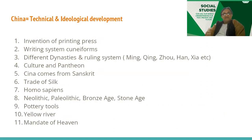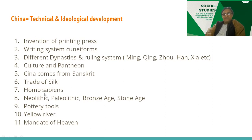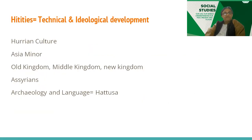For China on technical development — China and Egypt are the two you have to focus on more. Key topics: invention of the printing press, the cuneiform writing system, different dynasties and their rulers — Ming, Qin, Zhu, Han, Xia, and other dynasties. You should go and read the time periods and who was the ruler of each. Culture and pantheons: Sina comes from the Sanskrit word for China; the trade of silk; homo sapiens; Neolithic, Paleolithic, Bronze Age, Stone Age; pottery tools; Yellow River; and the Mandate of Heaven — the claim of special authority from God to rule.